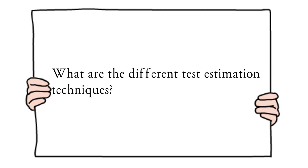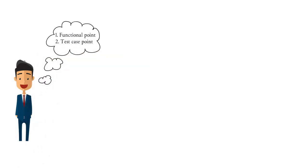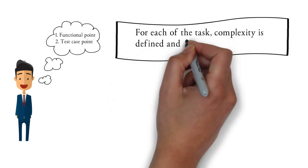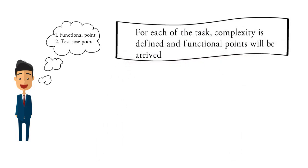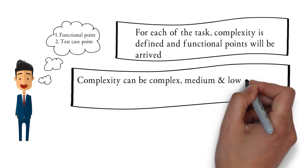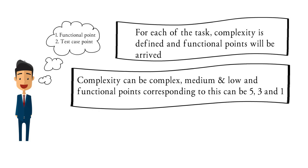Now let's see about the different estimation techniques used in the software testing industry. The two widely used estimation techniques are functional point analysis and test case point analysis. In functional point analysis, for each of the tasks, complexity is defined and functional points are arrived depending on how tough the task is. The complexities can be complex, medium, or low, and based on the complexity we assign functional points — 5 for complex, 3 for medium, and 1 for low.